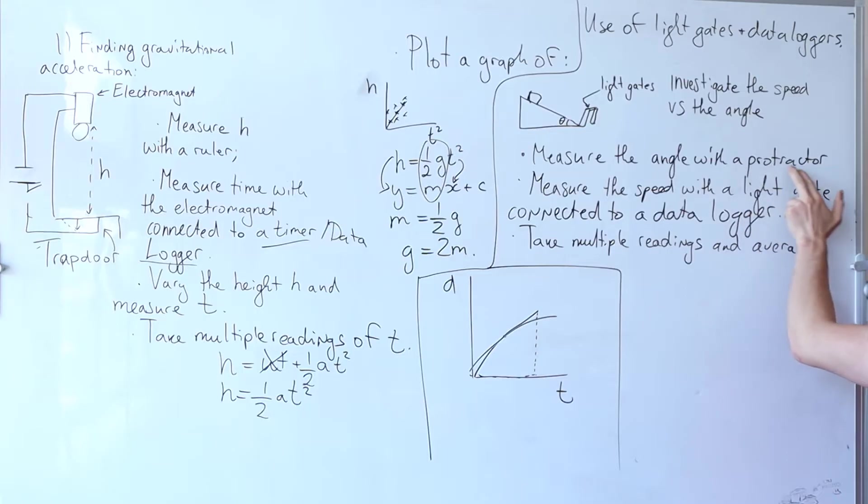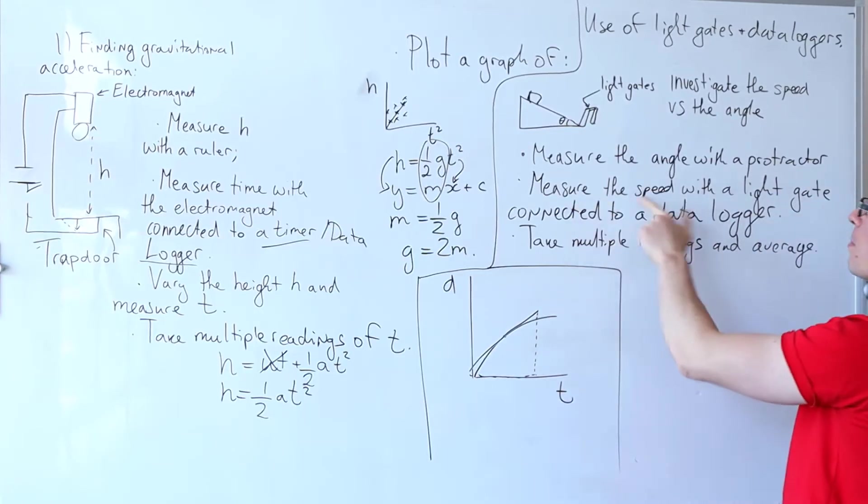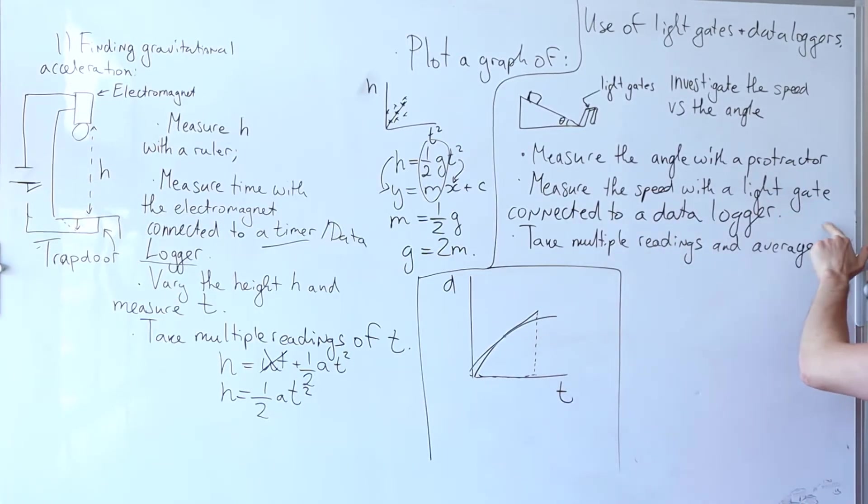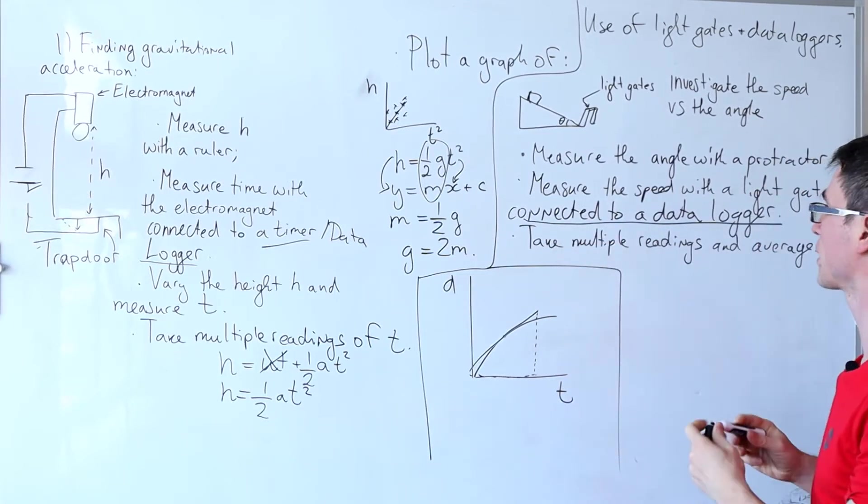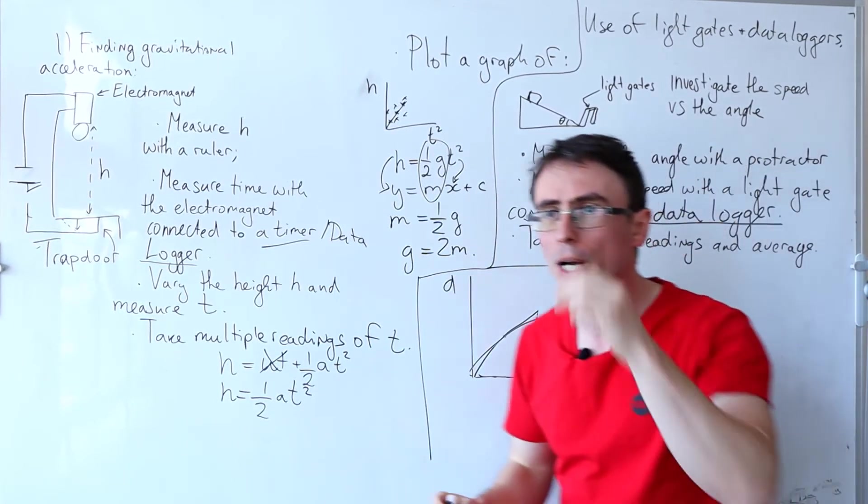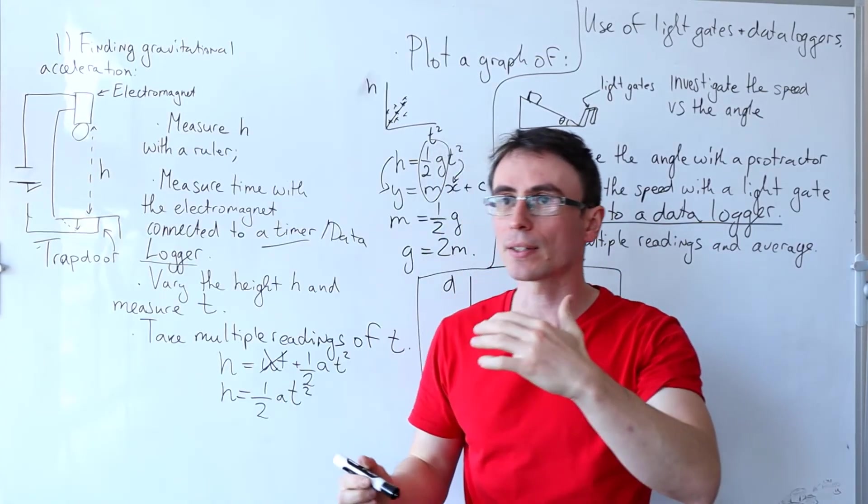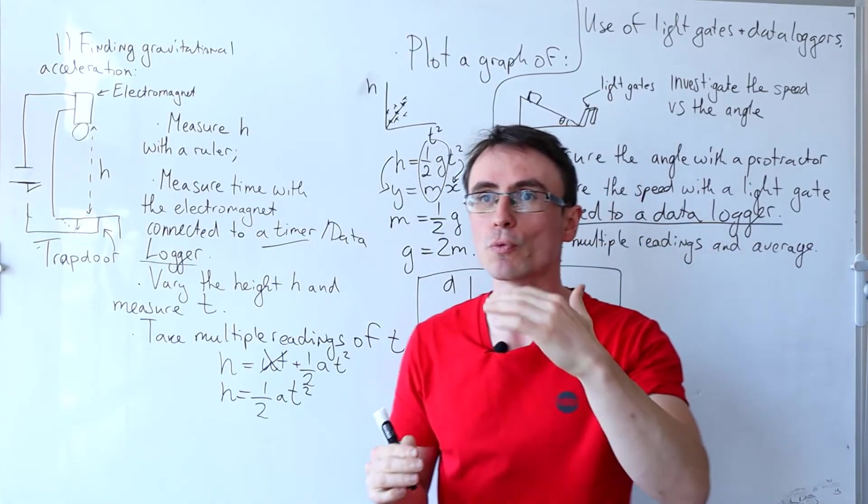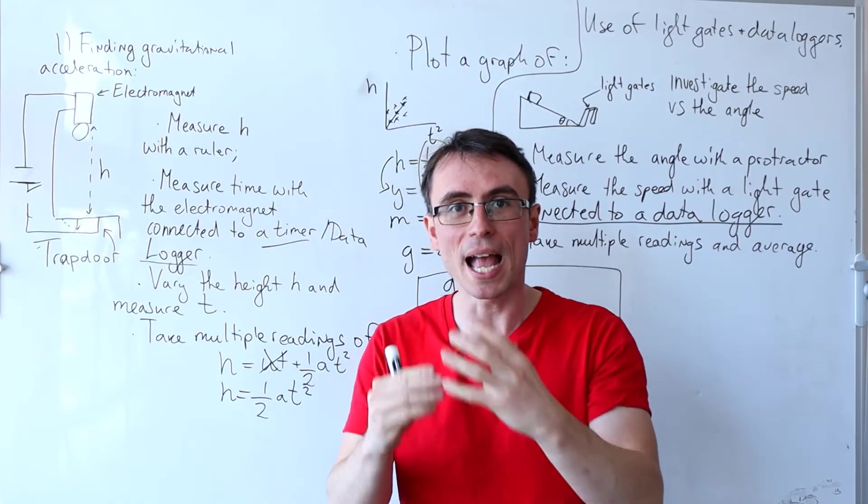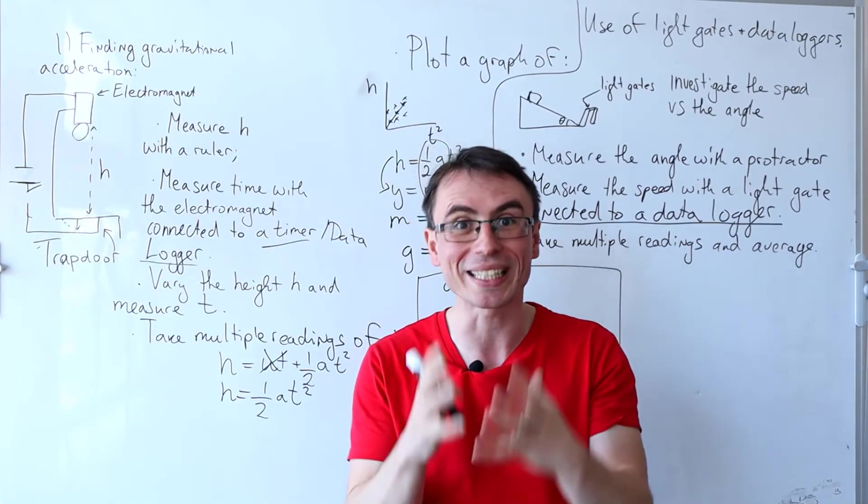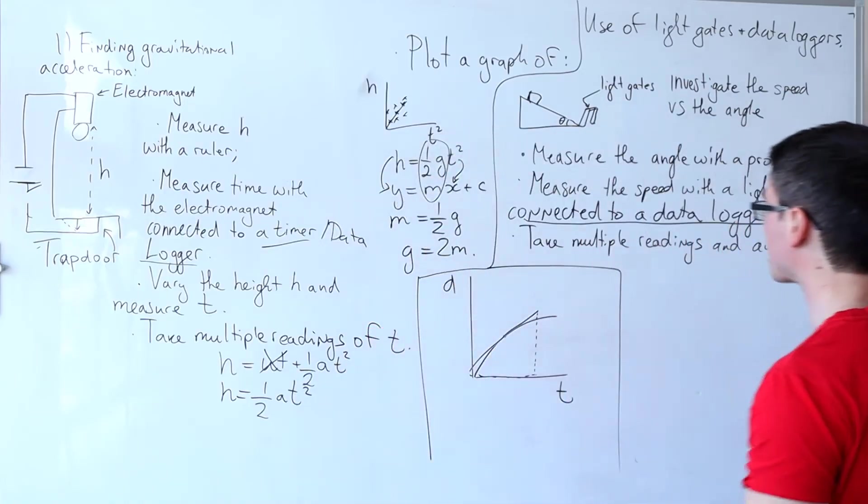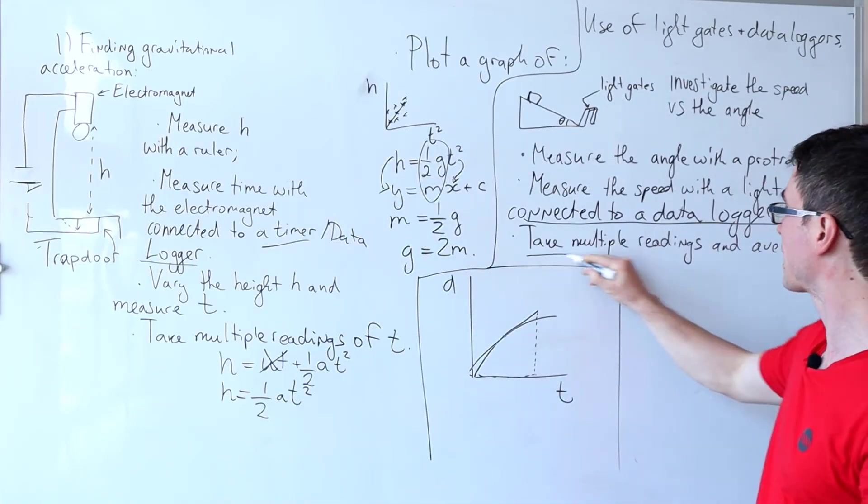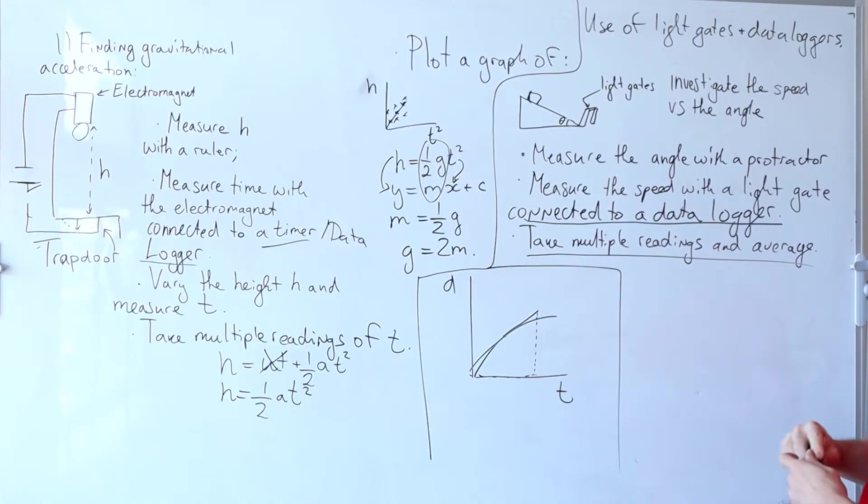We could vary the angle in this case and measure the speed. We're going to measure the angle with a protractor. We're going to be measuring the speed with a light gate connected to a data logger. The way this actually works is that the light gate can actually register the time that the object spent in there and the data logger can calculate its speed at that precise location. As always we're going to take multiple readings and then average.